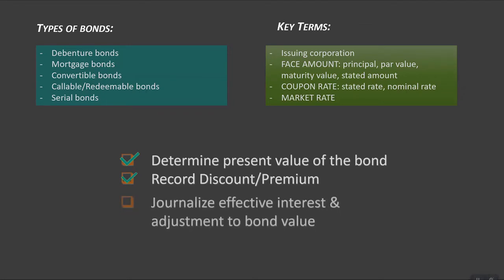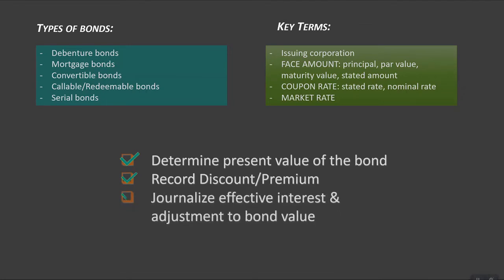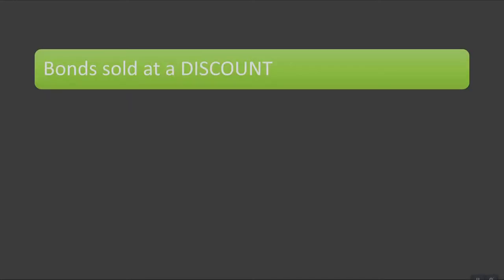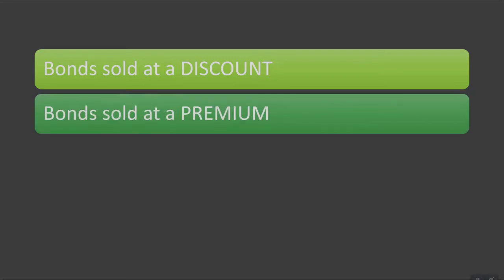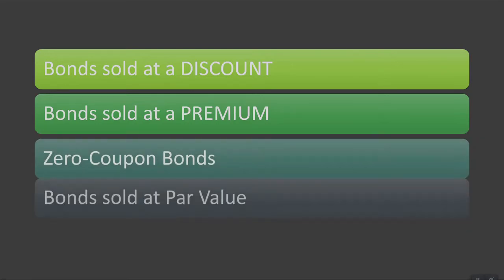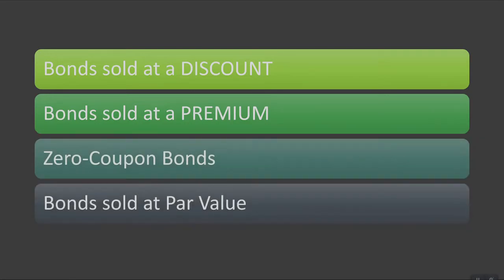We use the key terms of face amount, stated interest, and market interest to determine the present value of bonds, journalize them, and prepare an amortization schedule to support the value of the bonds as recorded. This video will specifically focus on recording bonds at a discount, although the steps are always the same. Additional videos will illustrate bonds issued at a premium, zero coupon bonds, and bonds sold at par value.